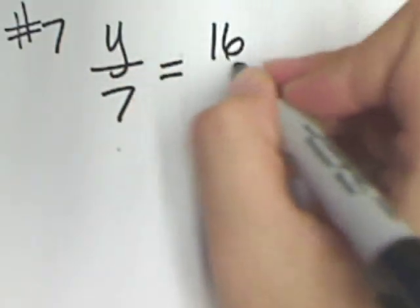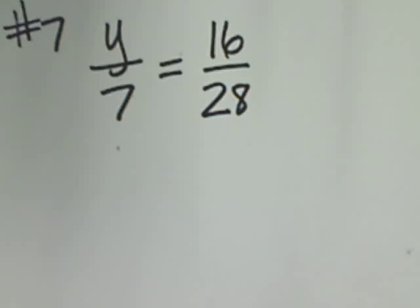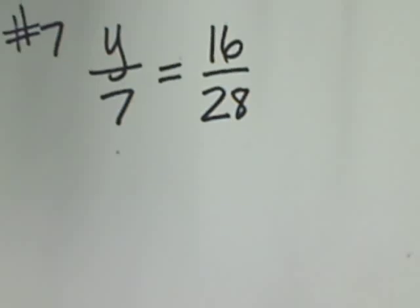Tell me what number 7 says. It says y over 7 and then 16 over 28. Okay, y over 7 equals 16 over 28.